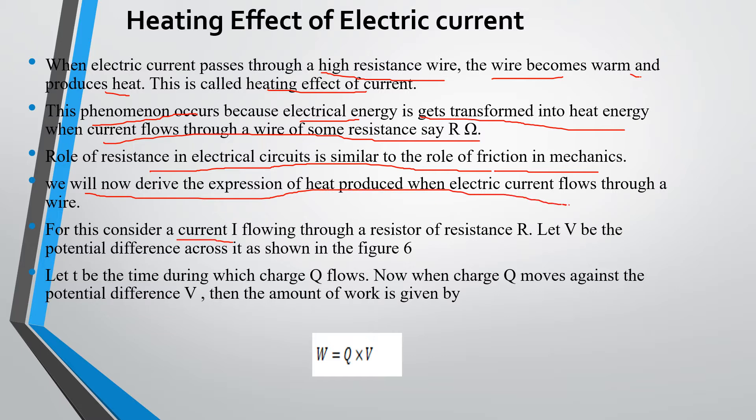For this, consider current I flowing through a resistor R. Let V be the potential across it. Let T be the time during which charge Q flows. Now, when charge Q moves against the potential difference V, then amount of work is W equals Q times V.